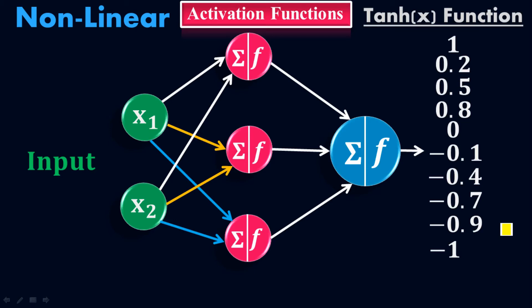This is not the same as what we saw in the sine function. If you remember, the sine function, which was a linear function, had only two possible values: negative 1 and positive 1. But in the tangent hyperbolic function we have all the values between negative 1 up to positive 1.